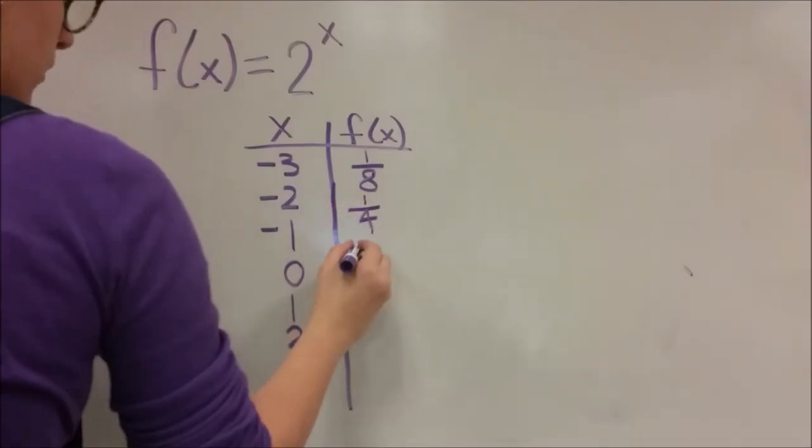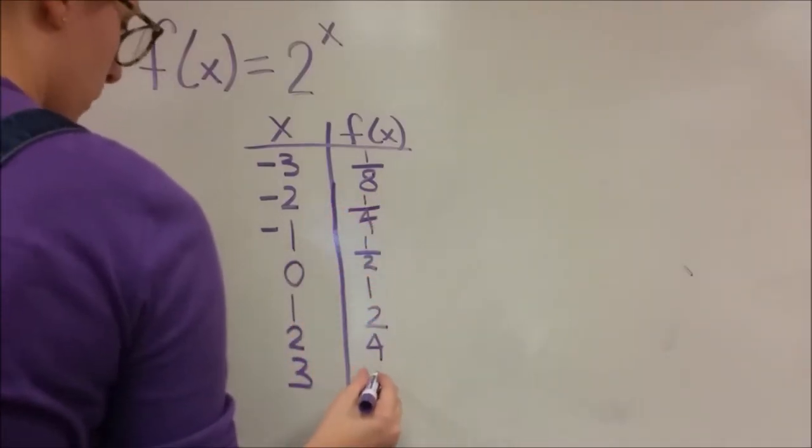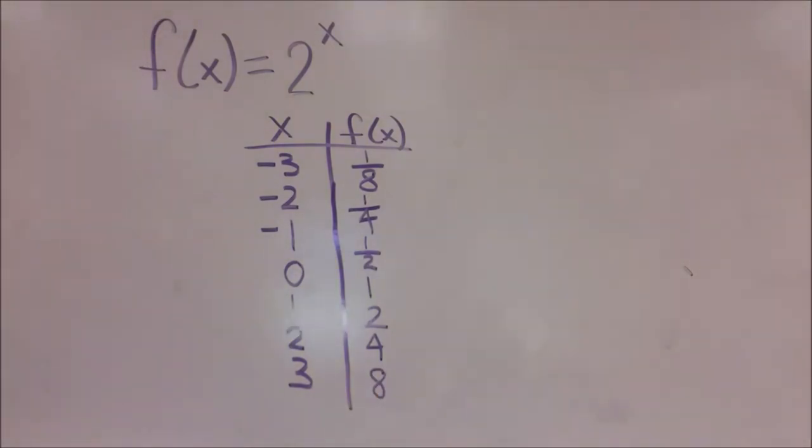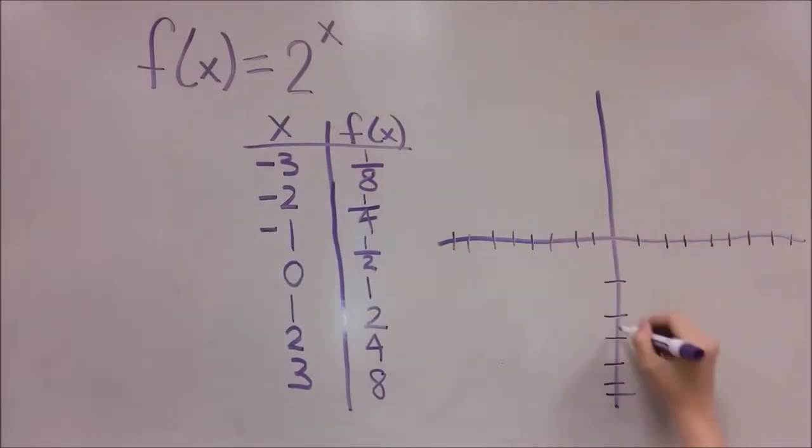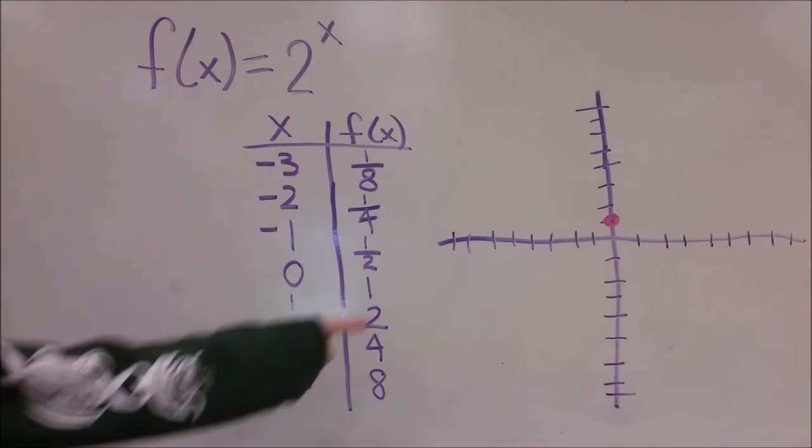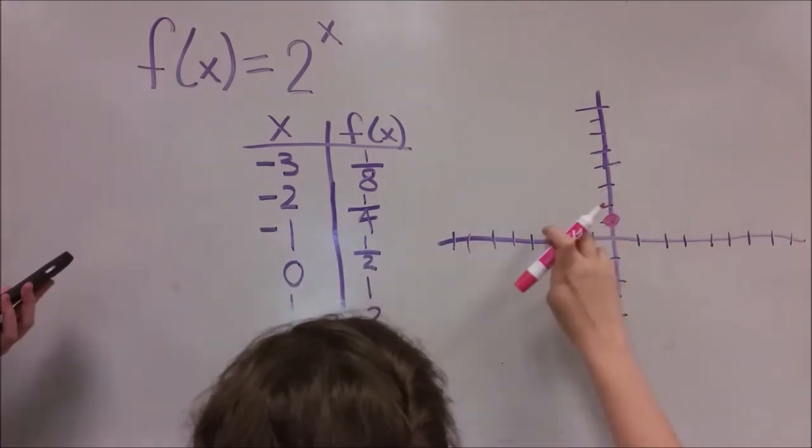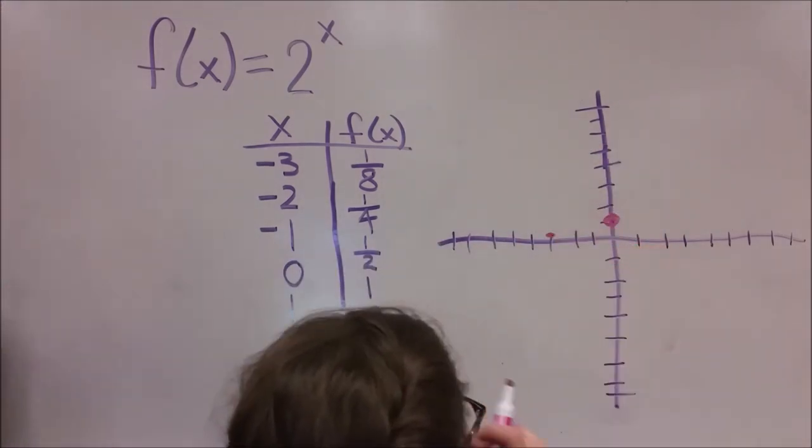The next step is to raise 2 to these powers. Okay, now that we have those figured out, we can start graphing. First, let's locate where our y-intercept is. From there, we can find the rest of the values we came up with in the table.